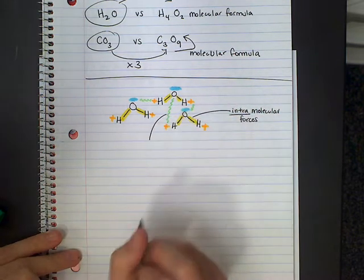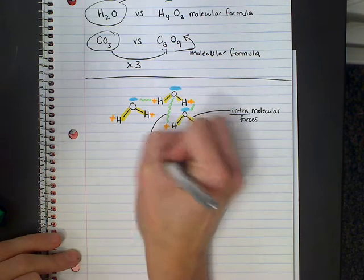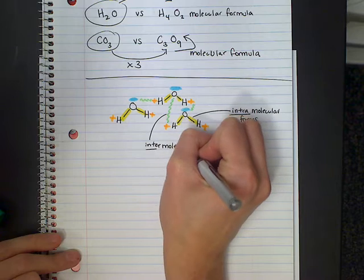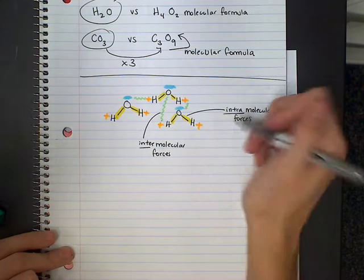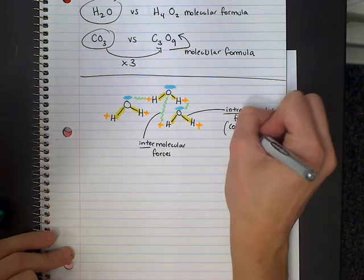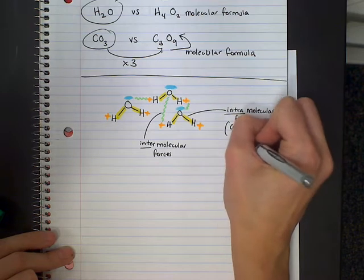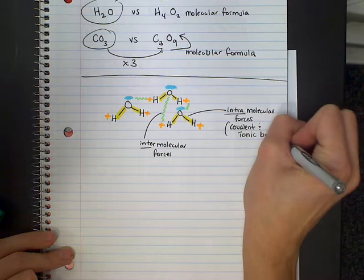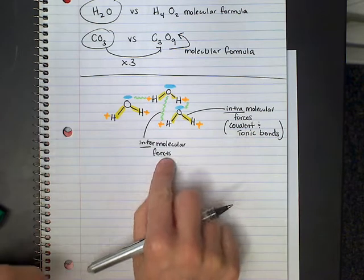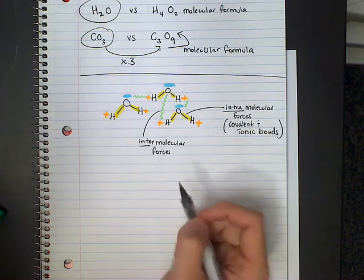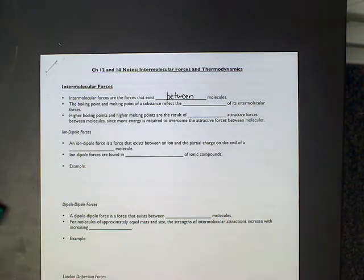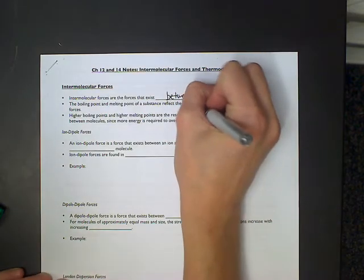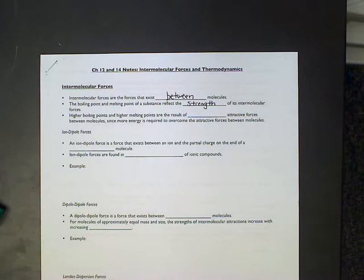So these green things that I just drew — those would be intermolecular forces. And just for reference, the intramolecular forces we were talking about were the covalent and ionic bonding. So intermolecular forces — we're going to learn four of them today, and that's going to be the topic for this unit. They're the forces that exist between molecules. The boiling point and melting point of a substance reflect the strength of its intermolecular forces.